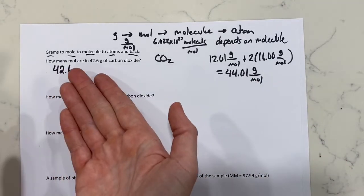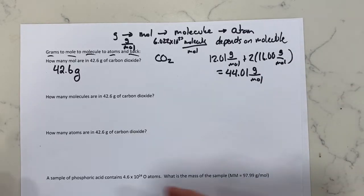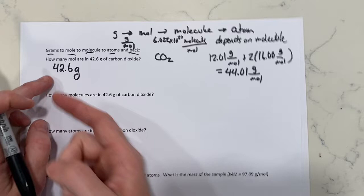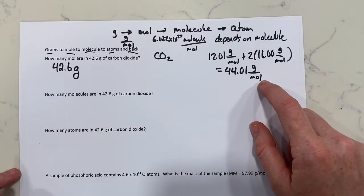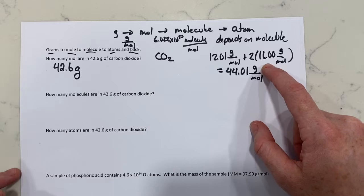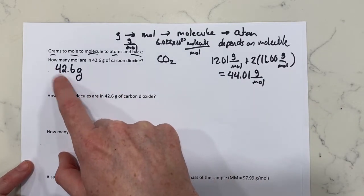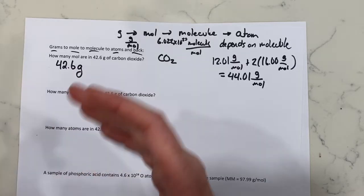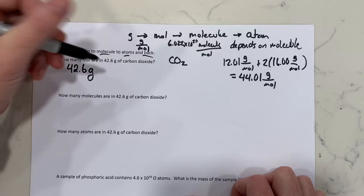How many moles are in 42.6 grams of carbon dioxide? First, let's think: if we had a mole of carbon dioxide, it'd be 44.01 grams. We have less than that, so we should expect the answer to be less than one — just less than a mole.